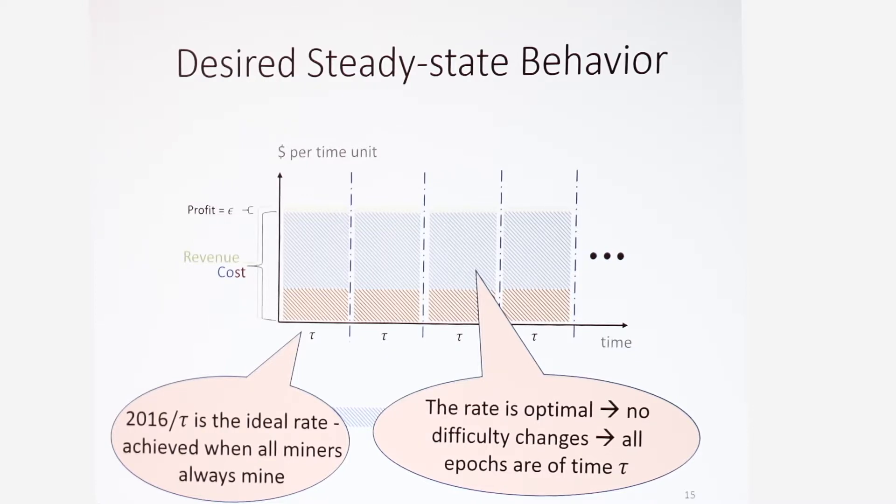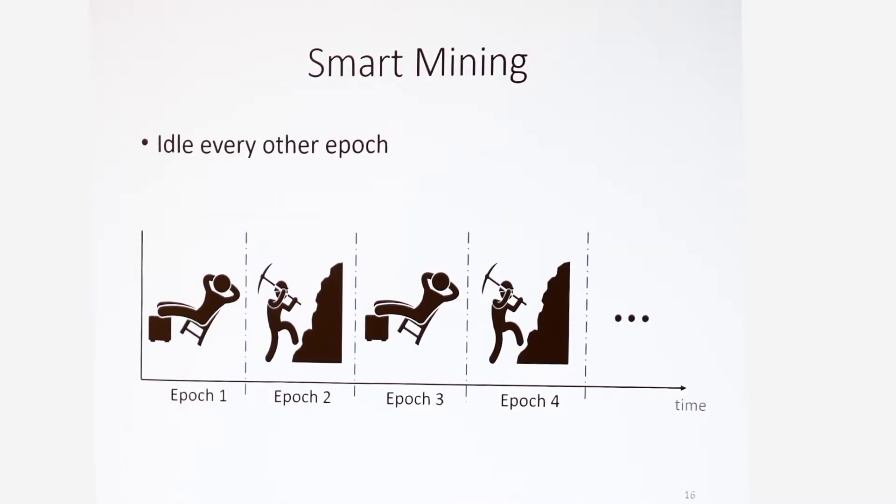Also, we want to have a desired rate. And since each epoch consists of exactly 2016 blocks, then the epoch duration sets the average rate. So all epochs should be of duration tau. In Bitcoin, tau is about two weeks. Now, if miners are honest, that is approximately what happens. Now let me show you what happens when miners are smart.